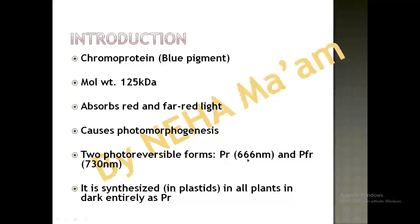PR absorbs light of 666 nanometers while PFR absorbs light of 730 nanometers. These are photoreversible forms — that is, PR can be converted into PFR, or PFR can be reverted back to PR, depending on the light which is provided to the phytochrome.